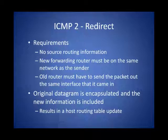When a redirect is to be sent, there are a couple of rules. First, the host cannot have included any source routing information in the IP packet, meaning the host cannot have specified the router to be used in forwarding this message. Second, the new router has to be on the same network as the source host. And lastly, the forwarded packet has to go out the same interface on the old router that it came in on. Whenever an ICMP error message like this one is sent, a portion of the IP packet that triggered the error is included in the ICMP error message, so that the host knows what packet created the problem.